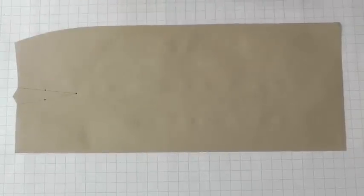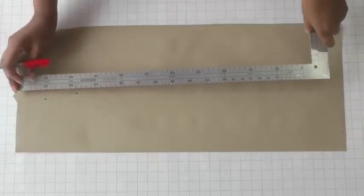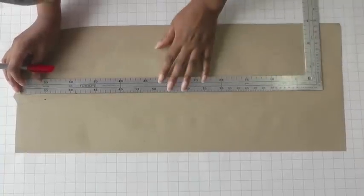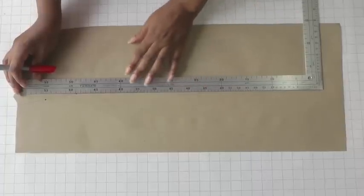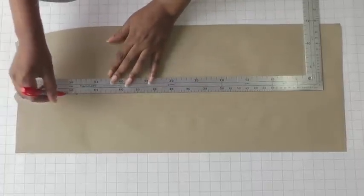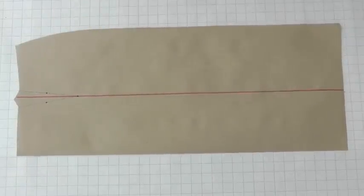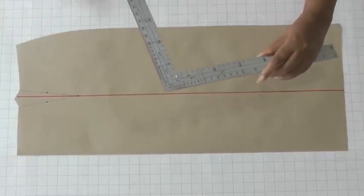Draw a vertical line from the waistline to the hemline, straight through the middle of the dart. Your pattern should look something like this.